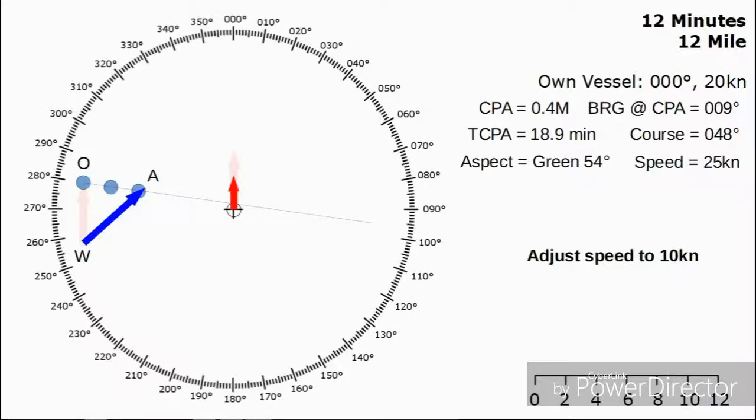We can plot on our new vector. We're still going 000, but we're now at 10 knots, so that's half the length that it was before. Our vector is still going to correspond to the way of our own vessel.